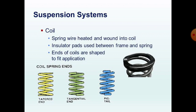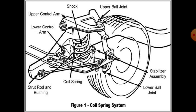In this coil spring suspension system, a simple coil spring is compressed with the help of mounting. There is an upper control arm and lower control arm, which are bolted together. The coil spring is compressed with the help of upper bolt joint and lower bolt joint. A stabilizer assembly and lower wall assembly are also used for compressing the coil spring.